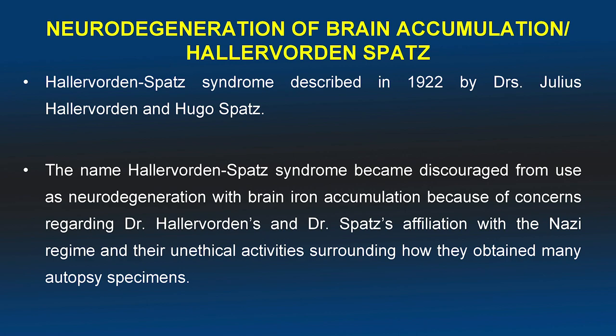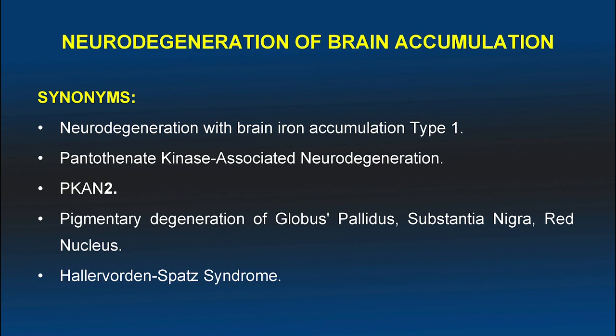The name Hallwarden syndrome became discouraged from use in favor of neurodegeneration with brain iron accumulation (NBIA), due to concerns regarding Hallwarden and Dr. Spatz's affiliation with the Nazi regime and their unethical activities surrounding how they obtained autopsy specimens. NBIA can also be referred to by synonyms including neurodegeneration with brain iron accumulation type 1, pantothenic kinase-associated neurodegeneration (PKAN2), and pigmentary degeneration of globus pallidus, substantia nigra, and red nucleus.